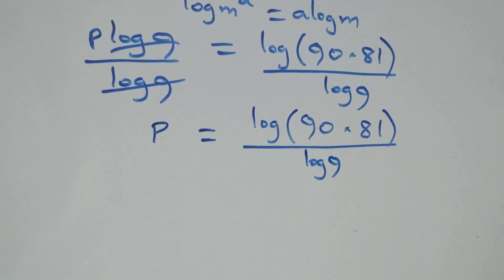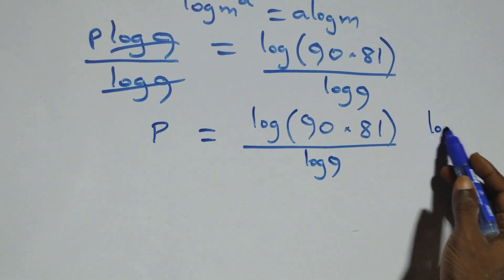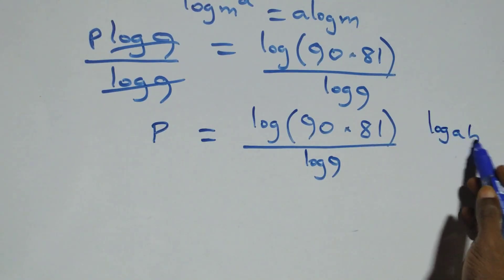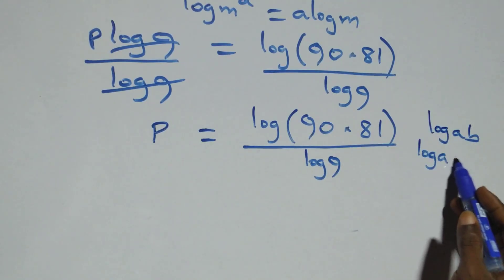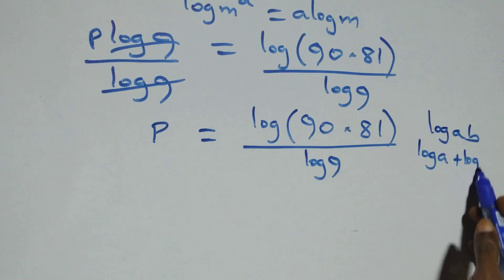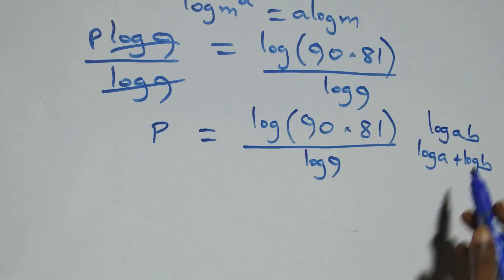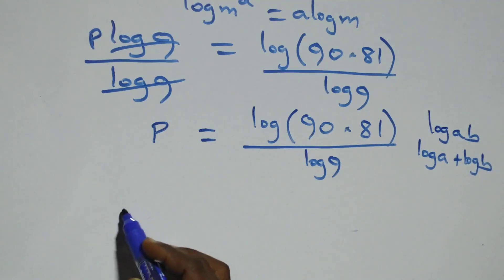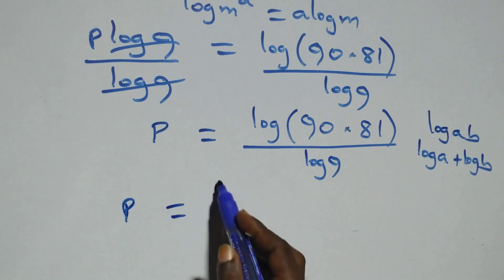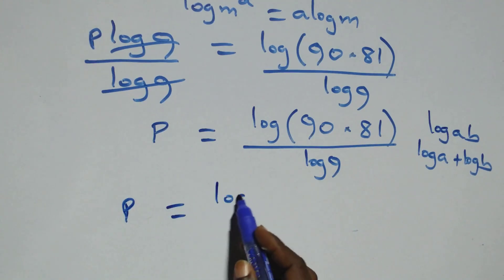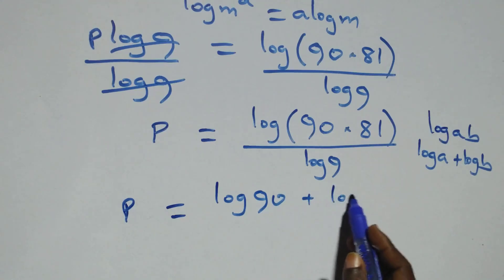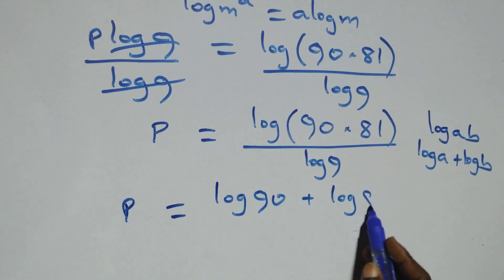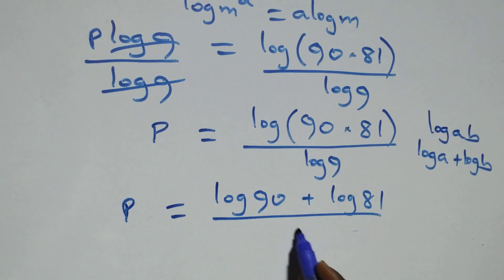From here this follows the law of logarithm: when we have log(a times b), this is the same thing as log a plus log b. So we have p equals to log 90 plus log 81, all over log 9.